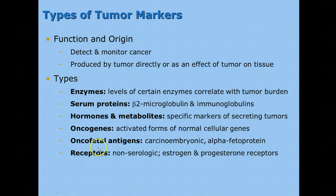We have different types of tumor markers that we look at in the laboratory when talking about cancer. They can be used to detect and monitor cancer, though most are used to monitor the effectiveness of treatment. Tumor markers are produced by the tumor directly, or as an effect of the tumor on the tissue it is growing in. Types include enzymes, serum proteins such as beta-2 microglobulin or other immunoglobulins, hormones, oncogenes, which are activated forms of normal cellular genes, oncofetal antigens found in the fetus and in cancer, or some type of receptor.